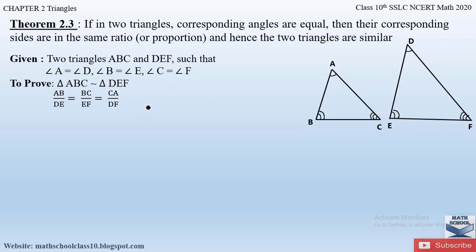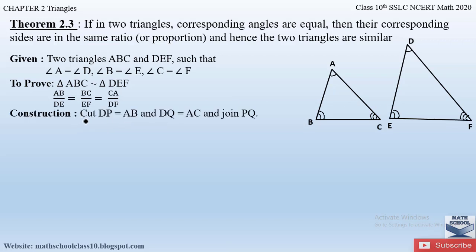To prove this we need a small construction. We cannot use the similarity criteria directly, so we use a congruency criteria. Construction: mark a point P on side DE such that DP = AB, and mark a point Q on side DF such that DQ = AC, then join P and Q. So DP = AB and DQ = AC.